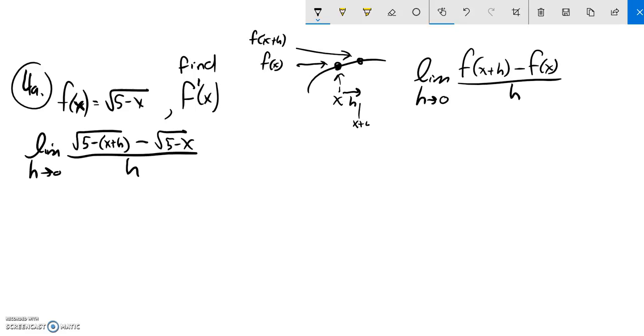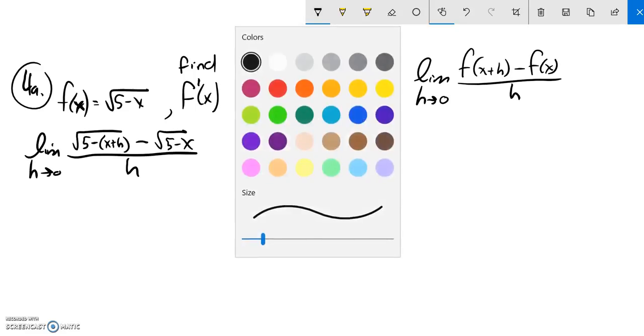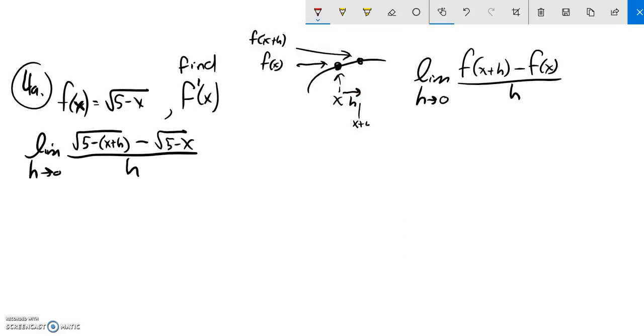So notice if I try to do direct substitution here, I'm dividing by 0. So that does nothing for me. I have radicals up here, so I'm going to try and rationalize this numerator and hope that I can cancel out an h.